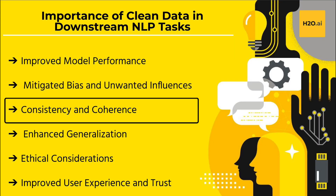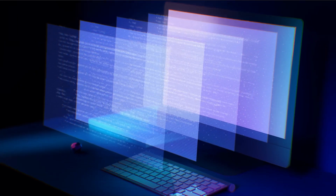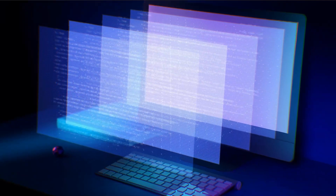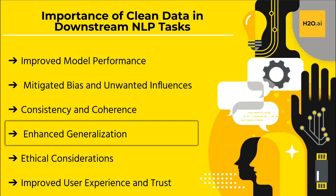Third, consistency and coherence: cleaned data ensures consistency and coherence in the input provided to the model. Inconsistencies such as conflicting information or contradictory statements can confuse the model and negatively affect its responses. Cleaning and standardizing the data offers a more coherent and reliable input, enabling the model to generate more meaningful and accurate outputs.